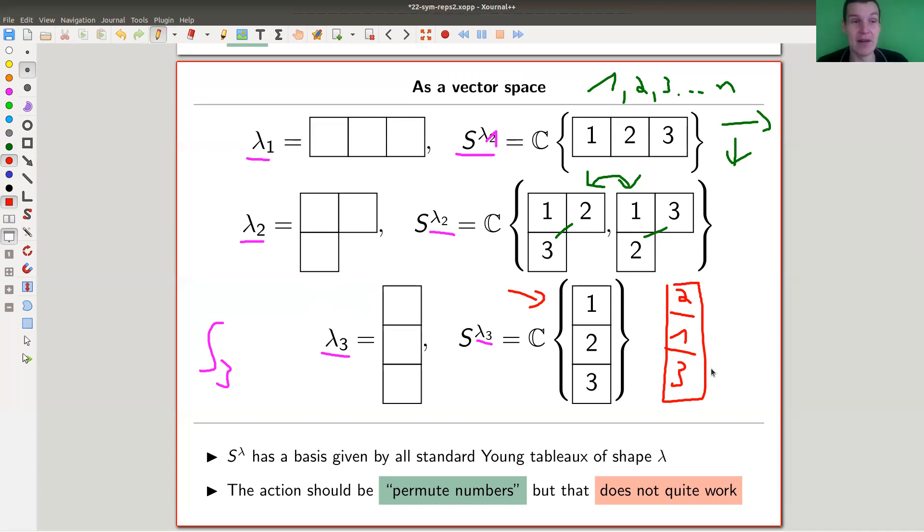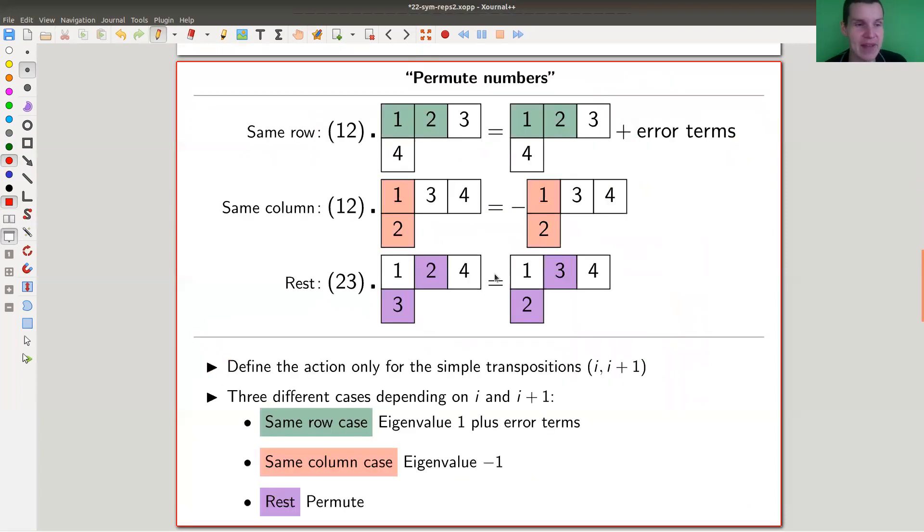The wannabe, the correct formulation in huge quotation marks would be just permute numbers, and that's your action. But it doesn't quite work, and what you need to do is the following. You basically have three cases: the rest case, which is my purplish case here, is the permutation. If I can permute numbers nicely, I just do it.